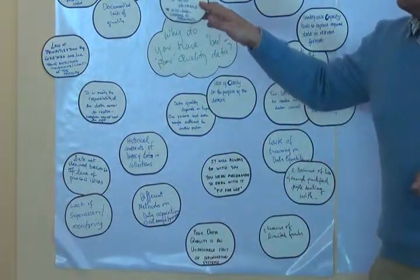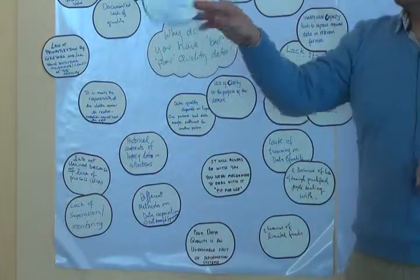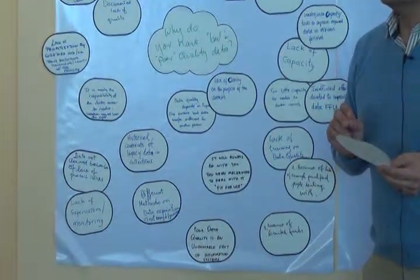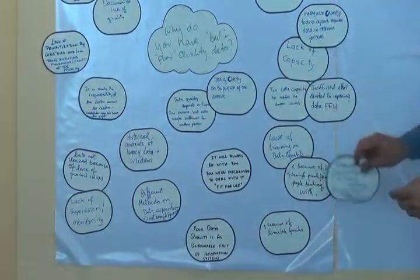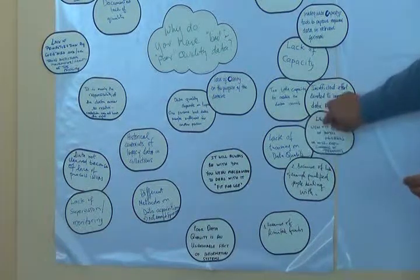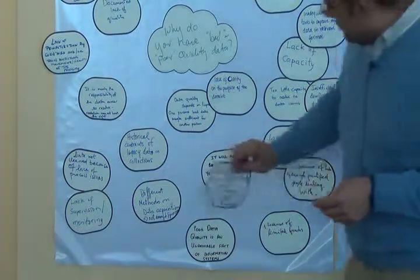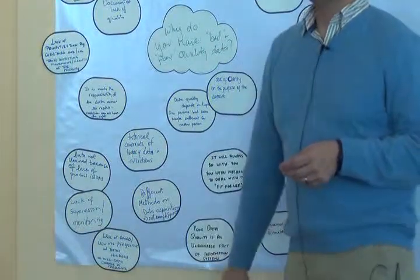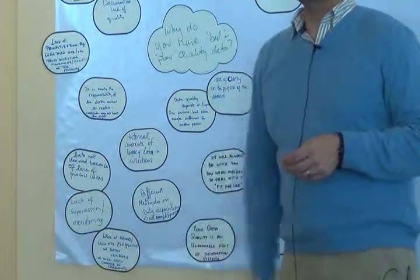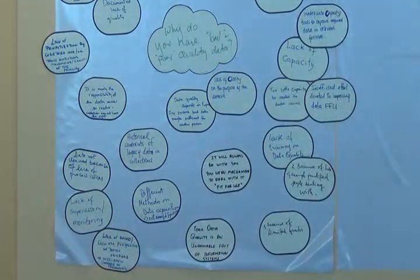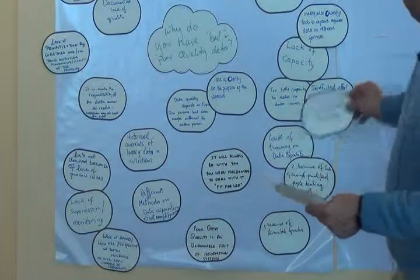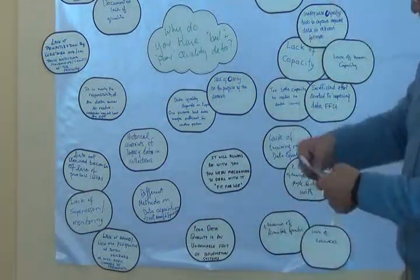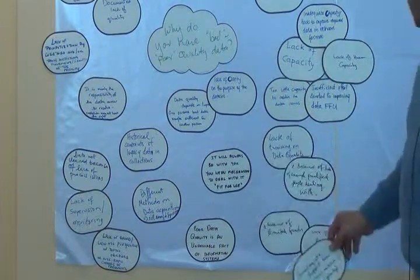When you have people coming in and out of an organisation every couple of years, or graduate students collecting data for three months and then moving on to fifteen other projects — it's a process capacity issue. Lack of human capacity, lack of resources, and inadequate support from decision makers.